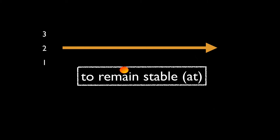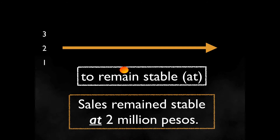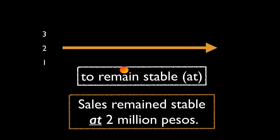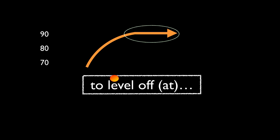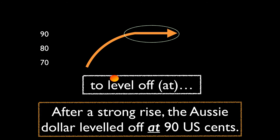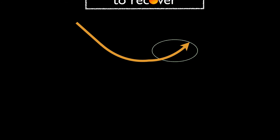To remain stable at: sales remained stable at two million pesos. To level off at: after a strong rise, the Aussie dollar leveled off at 90 US cents.